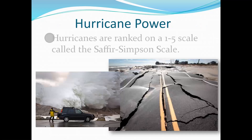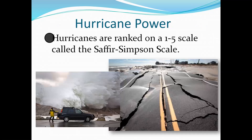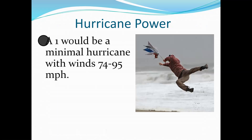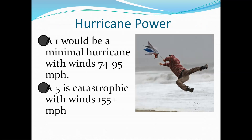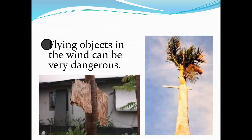Hurricanes are ranked on a scale of 1 to 5 called the Saffir-Simpson scale. You may have heard of Category 1 compared to Category 5. Category 1 is a minimal hurricane but still needs to be taken seriously, with winds between 74 to 95 miles per hour. Whereas a Category 5 storm is catastrophic, with winds that reach upwards of 155-plus miles per hour. Wind is a big problem — it can pick up loose objects and sling them, which is very dangerous.